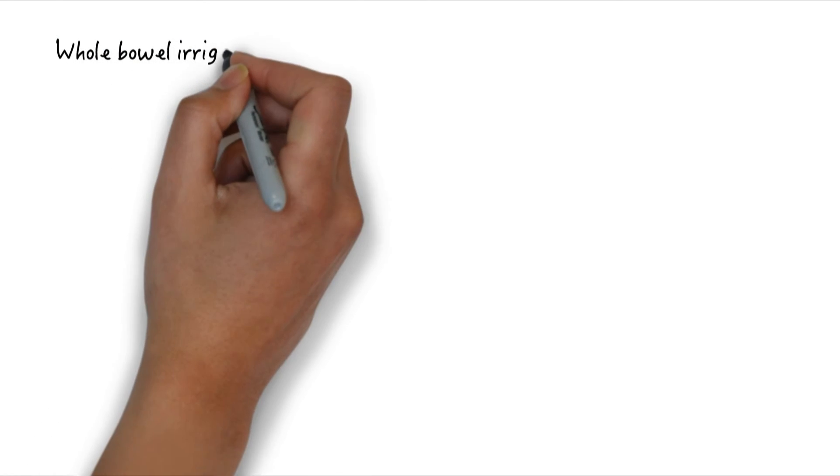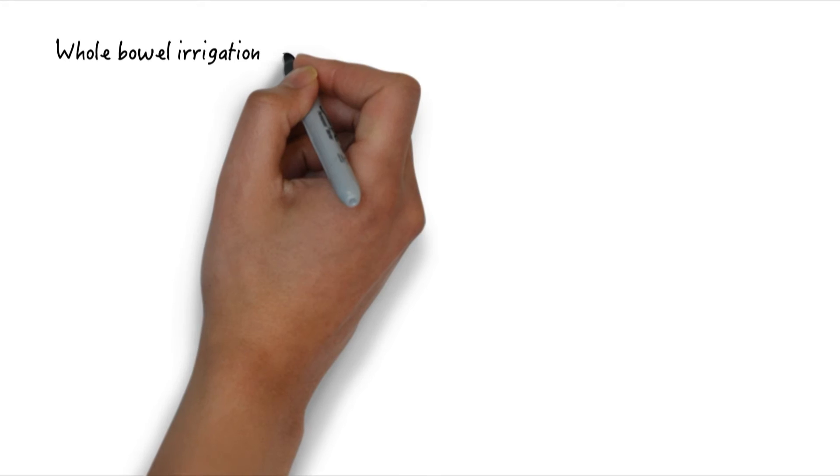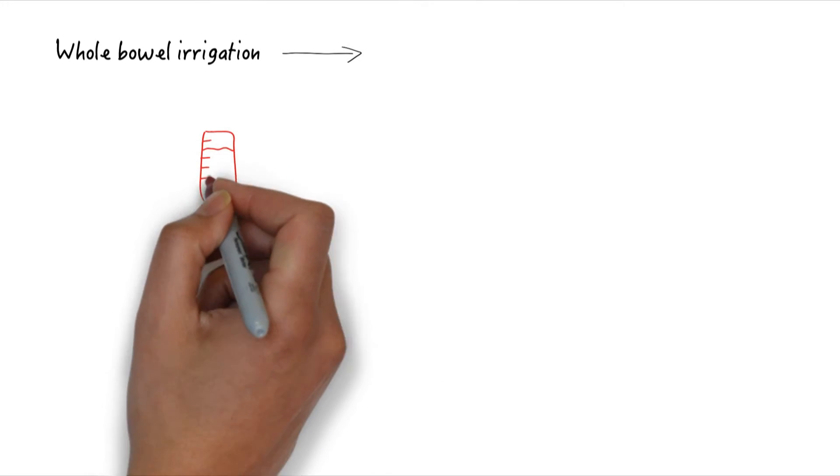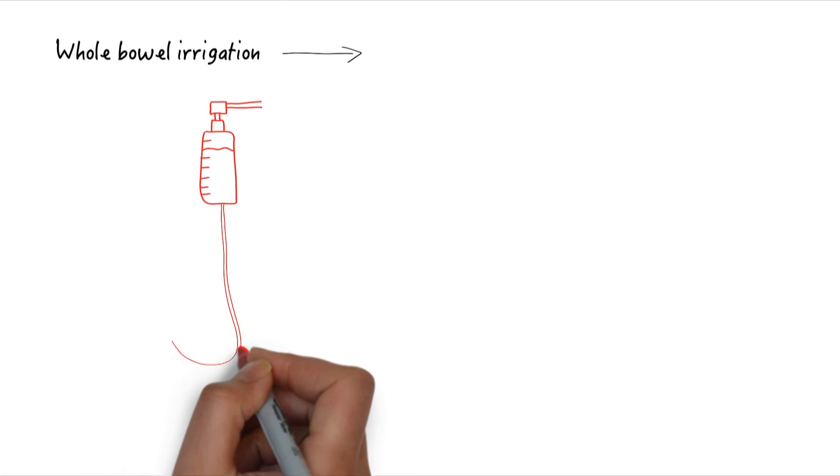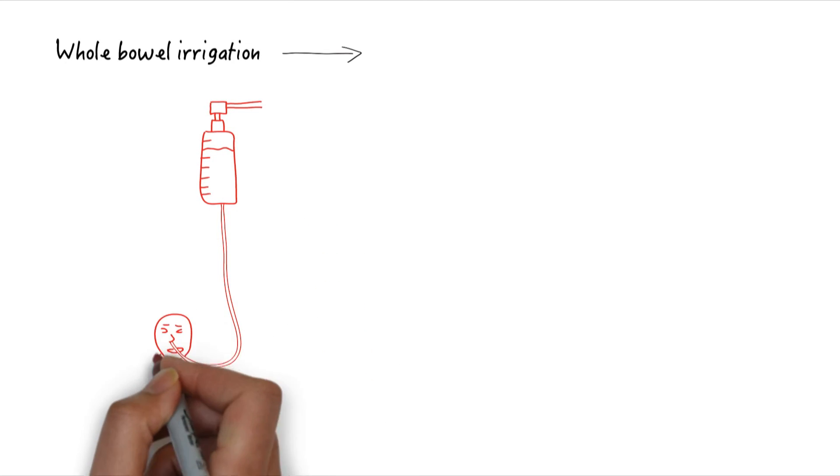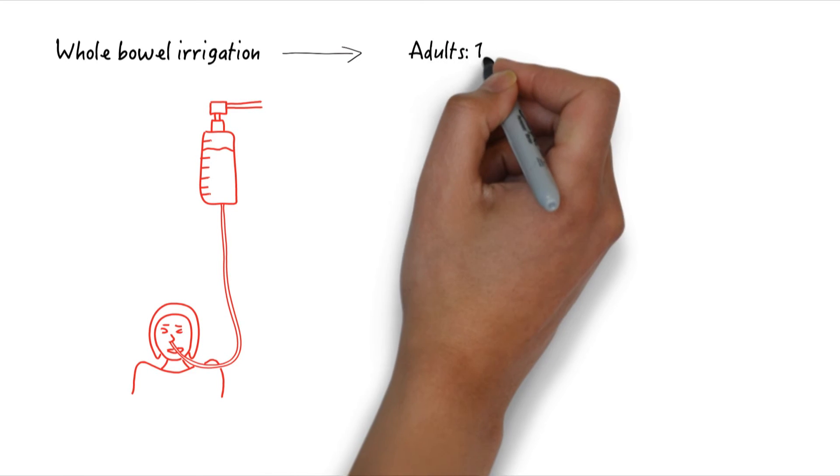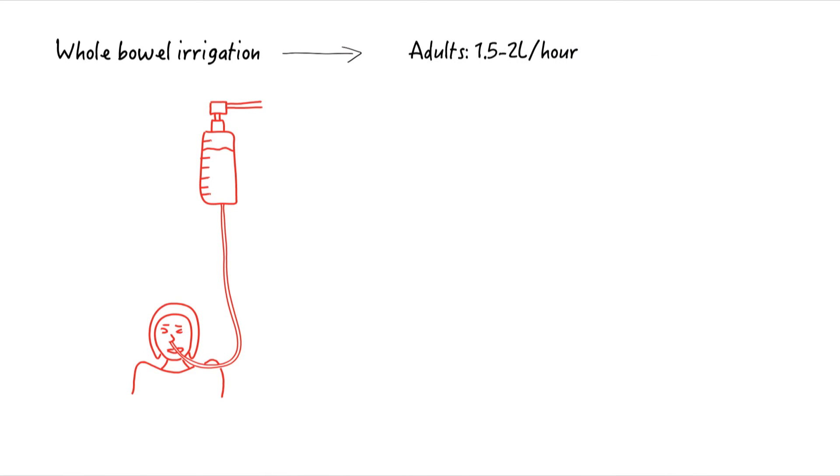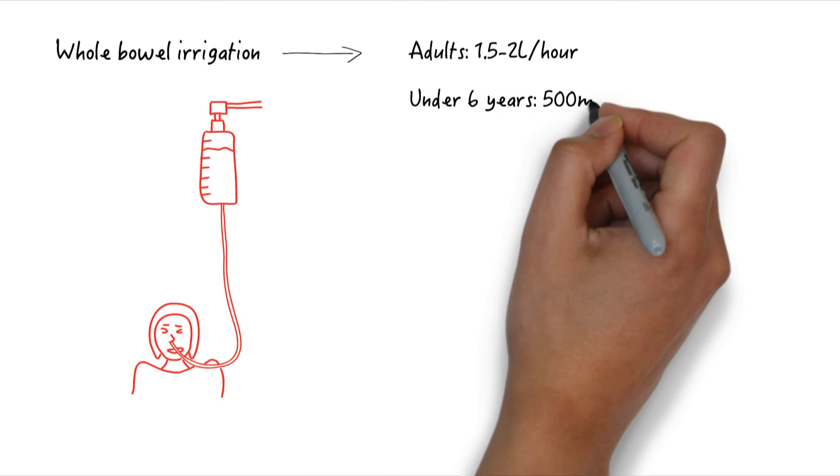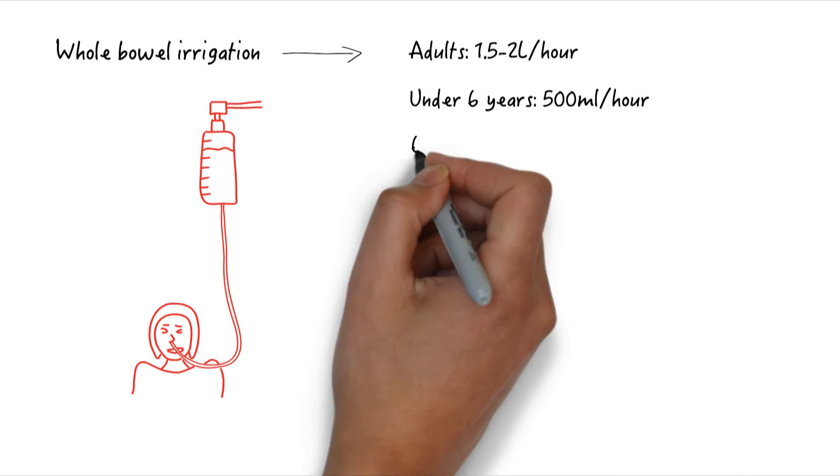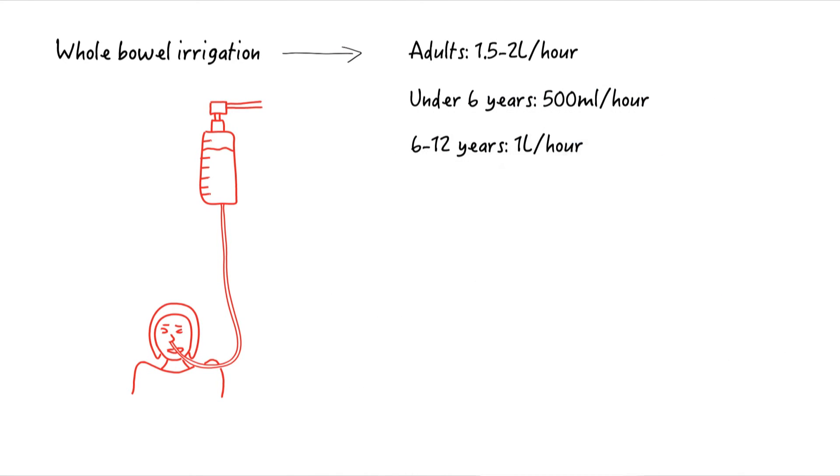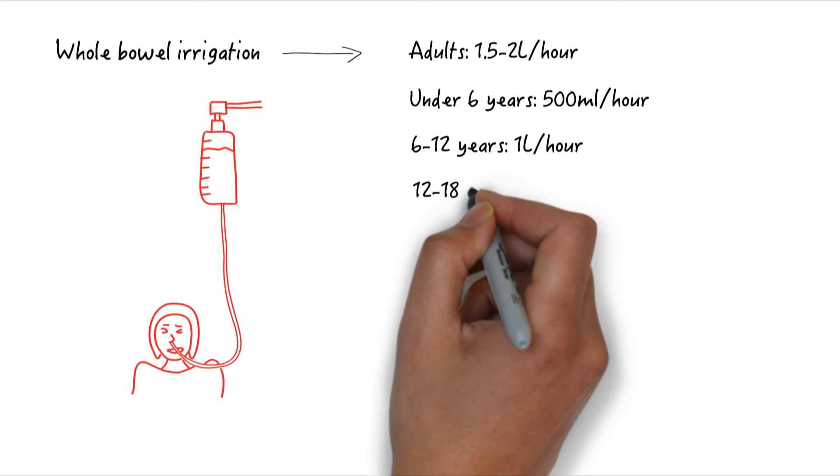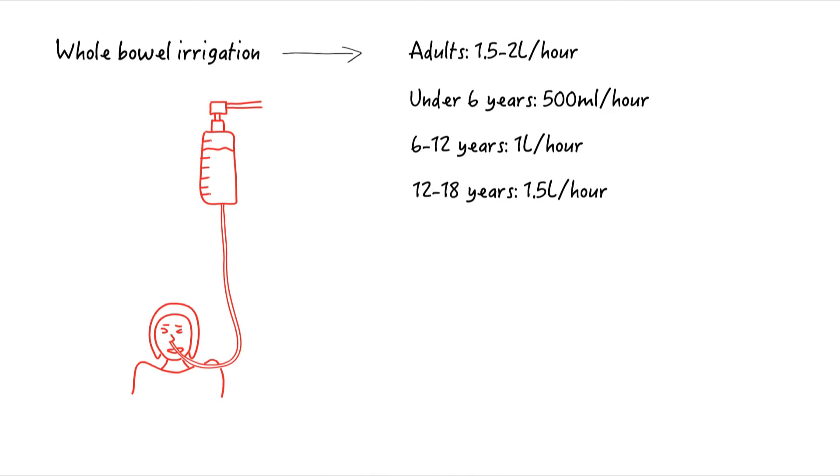Whole bowel irrigation can be used by instilling polyethylene glycol through a nasogastric tube. This is recommended for ingestions with potential to cause serious toxicity, such as ingestions of at least 60 mg per kg. For adults, use a rate of 1.5 to 2 liters per hour. For children under 6, use 500 ml per hour. For children 6 to 12 years, use 1 liter per hour. For children over 12, use 1.5 liters per hour.